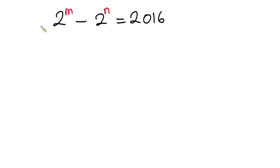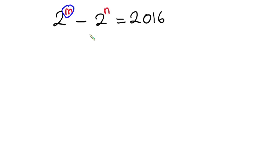Hello everyone. In this video we have this nice problem: 2 to the power m minus 2 to the power n is equal to 2016. As you can see, we have two variables in the same equation. Under normal circumstances, we may need two equations in order to solve for these variables, but unfortunately we have only one equation. So we will analyze this problem to find them.